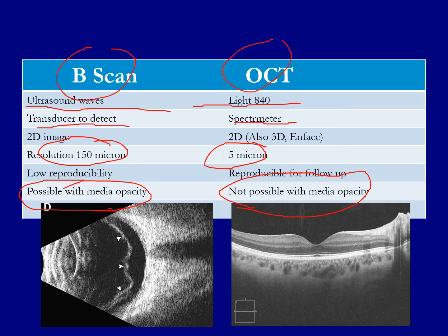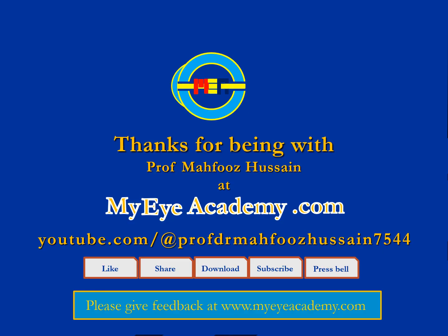In this B scan, you can see the retina which is detached from its own place — this is called retinal detachment. While this one is a normal OCT showing all the layers. Thank you very much for being with me. Do visit youtube.com at Professor Mahfouz Hussain 7544, and please do give your feedback.